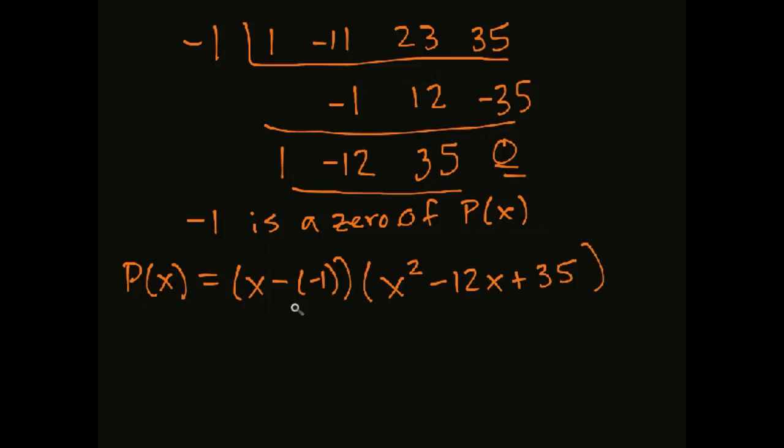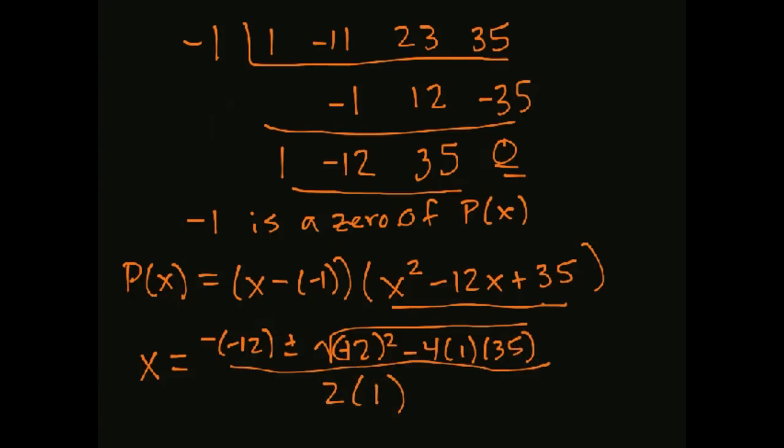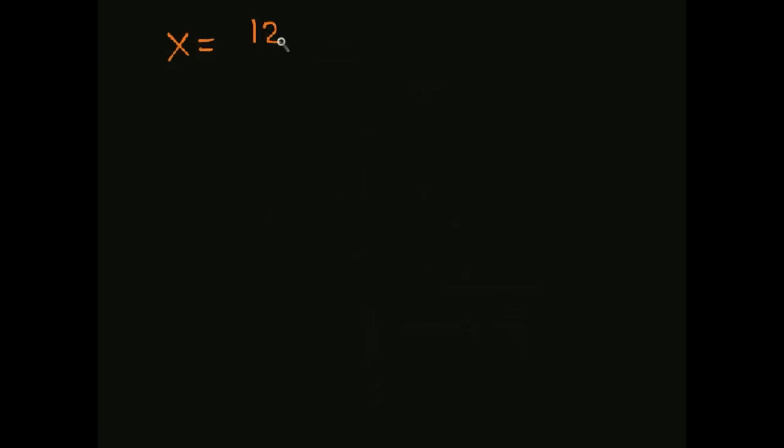So any further zeros, we've already found the zero that comes from this portion. Any further zeros are going to come from this portion. So we can repeat the process that we already did. Actually, we can go one step further. We can keep trying those real zeros, or at this point we have a quadratic, we could just use the quadratic formula, and that's actually probably going to be a little less work for us.